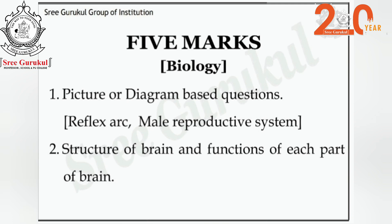In the biology part, for 5-mark questions, we can expect either picture-based or diagram-based questions. They may ask you to draw a diagram or give a picture and ask sub-questions A, B, C. The most common questions are reflex arc and male reproductive system. Structure of brain and functions of each part of the brain are also very important 5-mark areas. You must practice these questions.